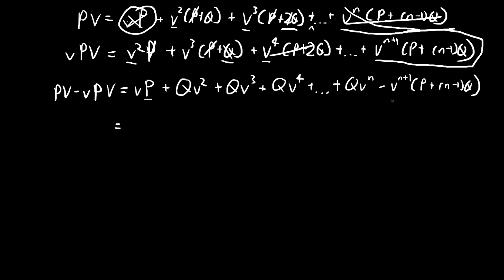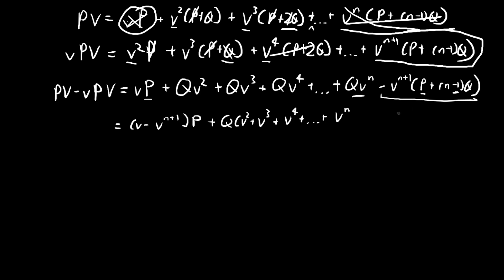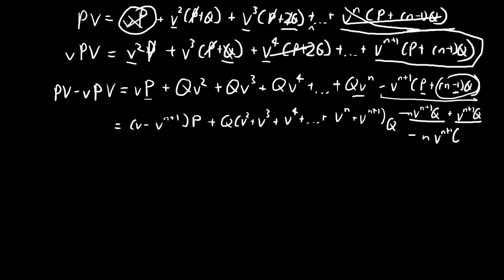Grouping terms: for P, we collect (V minus V^(N+1))·P. For the Q terms, we group V² + V³ + V⁴ + ... + V^N. Notice the final term V^(N+1)·(P+(N-1)Q) expands to give minus V^(N+1)·N·Q plus V^(N+1)·Q. The V^(N+1)·Q term fits into the series, extending it to V^(N+1), while the minus V^(N+1)·Q cancels it back out.